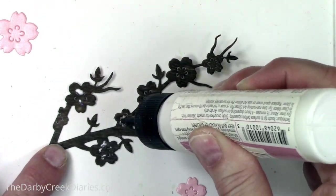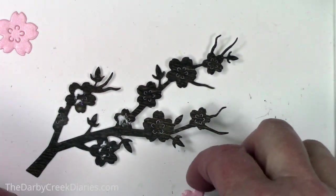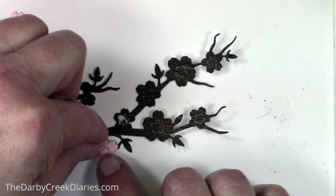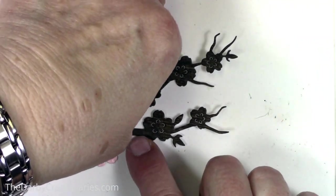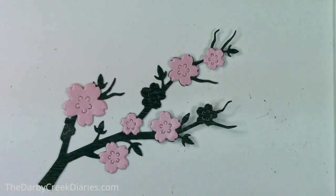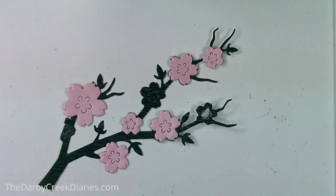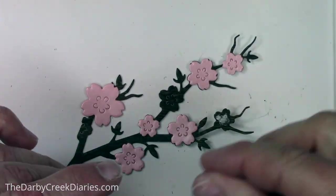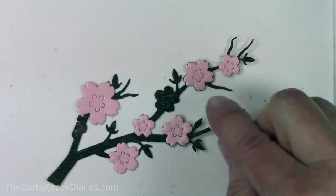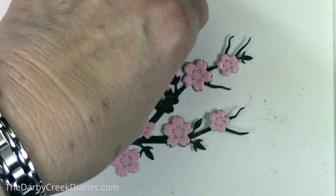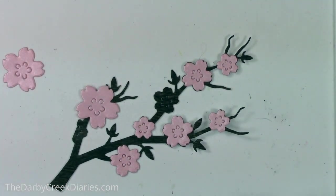Off screen I went ahead and die cut the Hero Arts Cherry Blossom die and I found some shiny pink cardstock which I think came out of a Hero Arts kit years ago. I can't seem to find any. I imagine that there is somebody that carries it. I die cut the flowers and I'm just putting them back on the branches exactly how they were intended to be. Except I went oh well that one's too big.